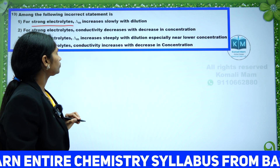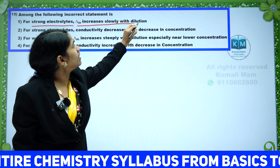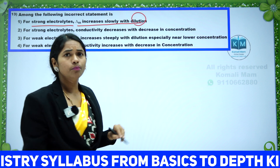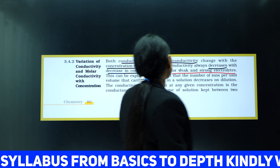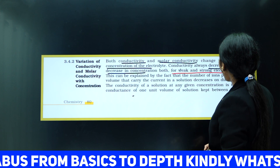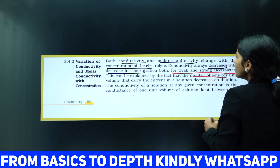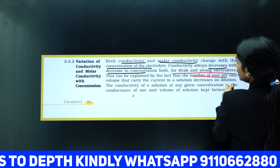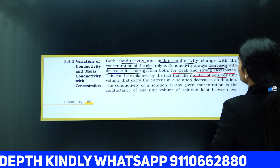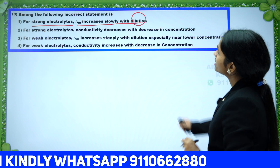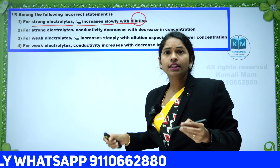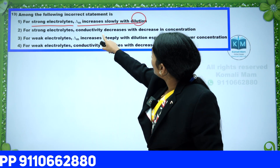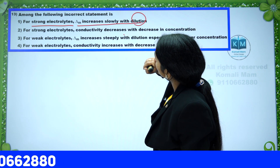For strong electrolytes, lambda M increases slowly with dilution. When you increase dilution, the number of ions increases, so conductivity also increases. Upon dilution, more ions carry the current in solution. So option one is correct. For strong electrolytes, conductivity decreases with a decrease in concentration — that is correct.